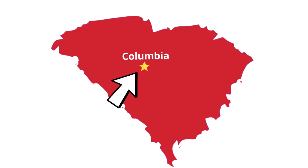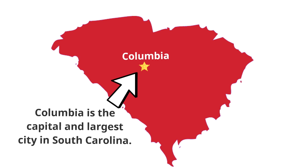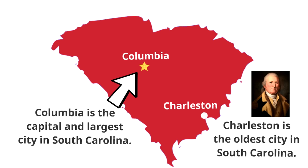Now let's look at a couple of places on the South Carolina map. Right near the middle of the state is Columbia — Columbia is the capital and largest city in South Carolina. On the coast in the southeastern part of the state is the city of Charleston. Charleston is the oldest city in South Carolina and the second biggest city. It's also the same place where Colonel William Moultrie's battle took place during the Revolutionary War.